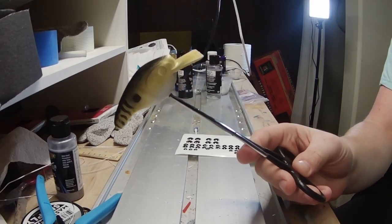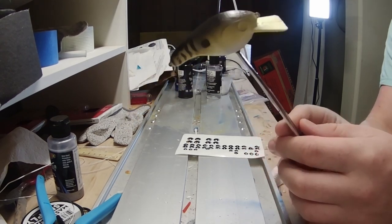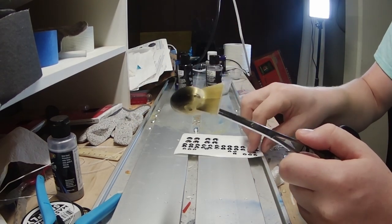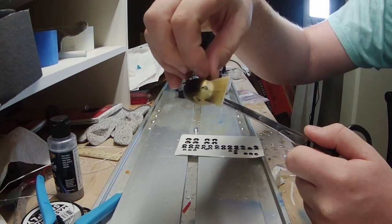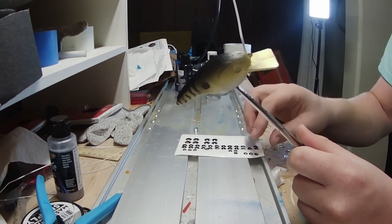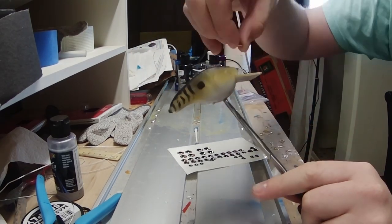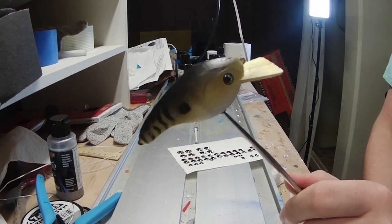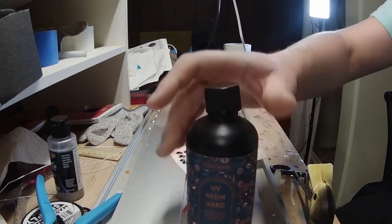So we're going to stick some eyes on here and do our clear coat. Now the reason this took so long is because I set up a whole new clear coat method. So now, rather than dipping it in something, we are going to use a UV resin and cure it that way. That's what these look like with the eyes on. So I just have this cheapo UV resin I bought off of Amazon.